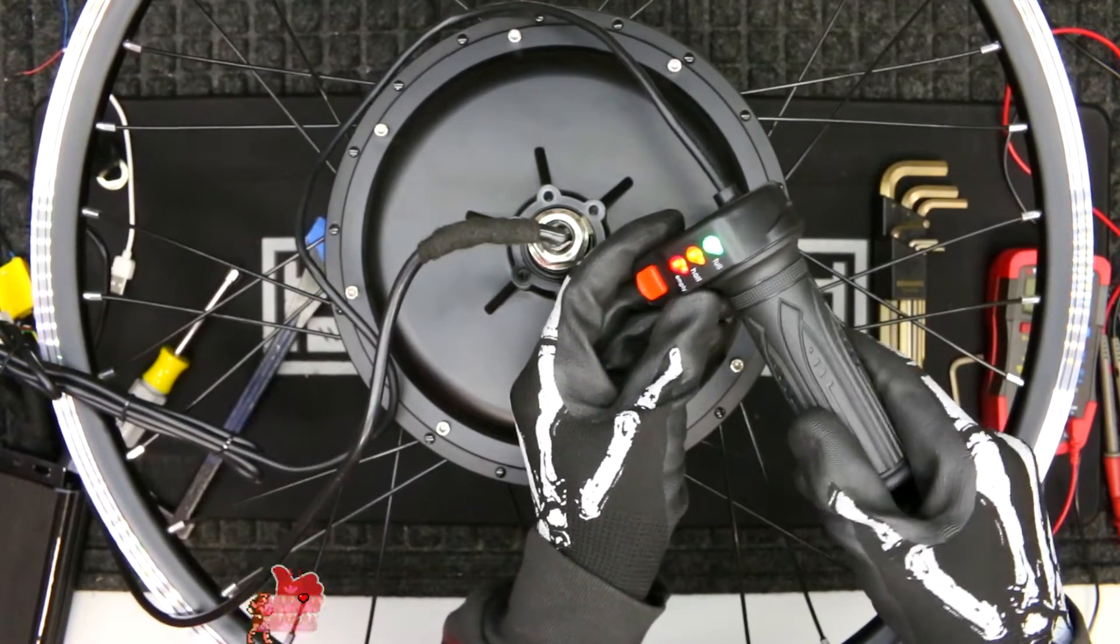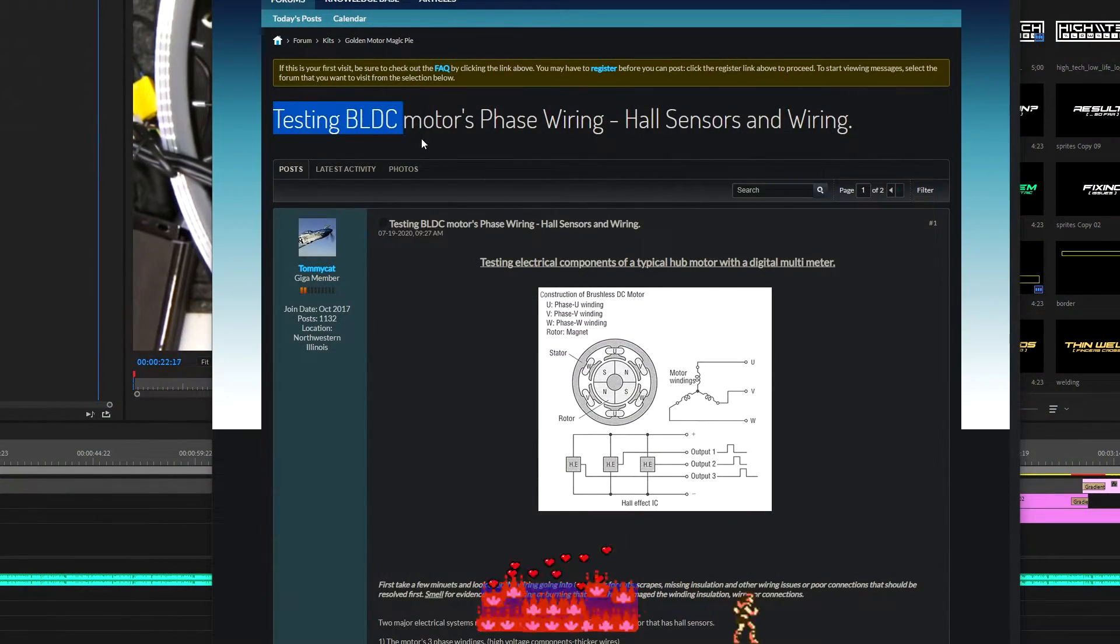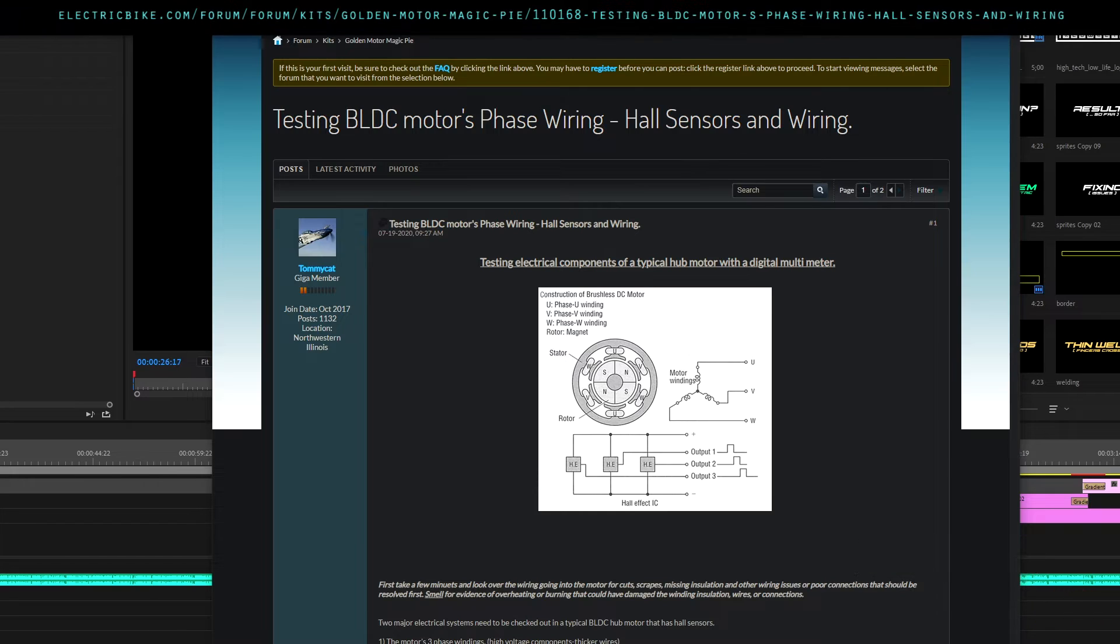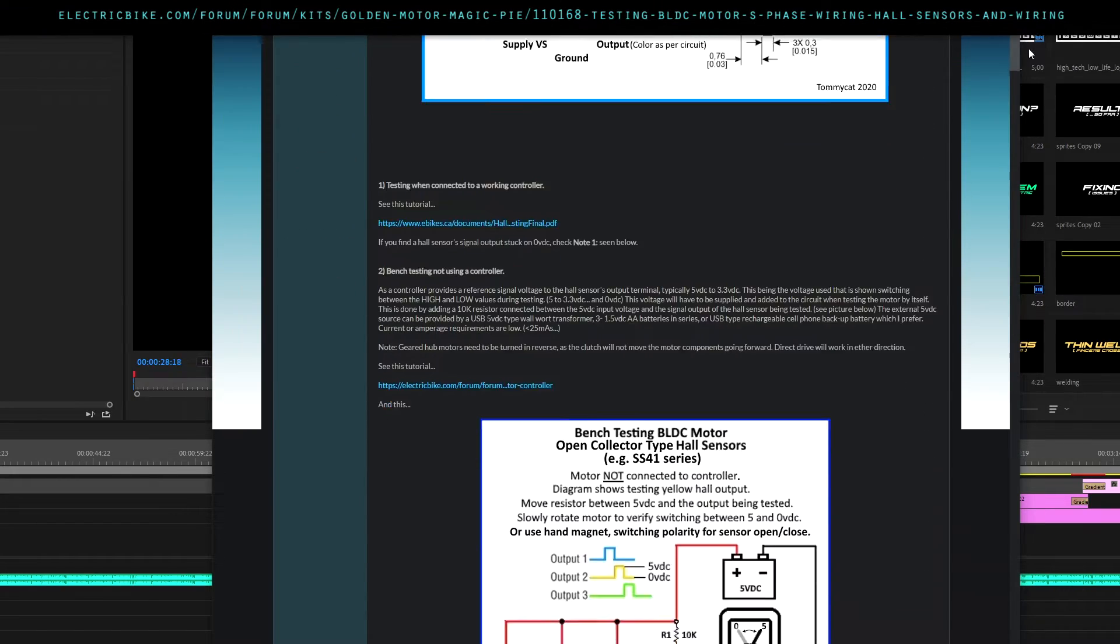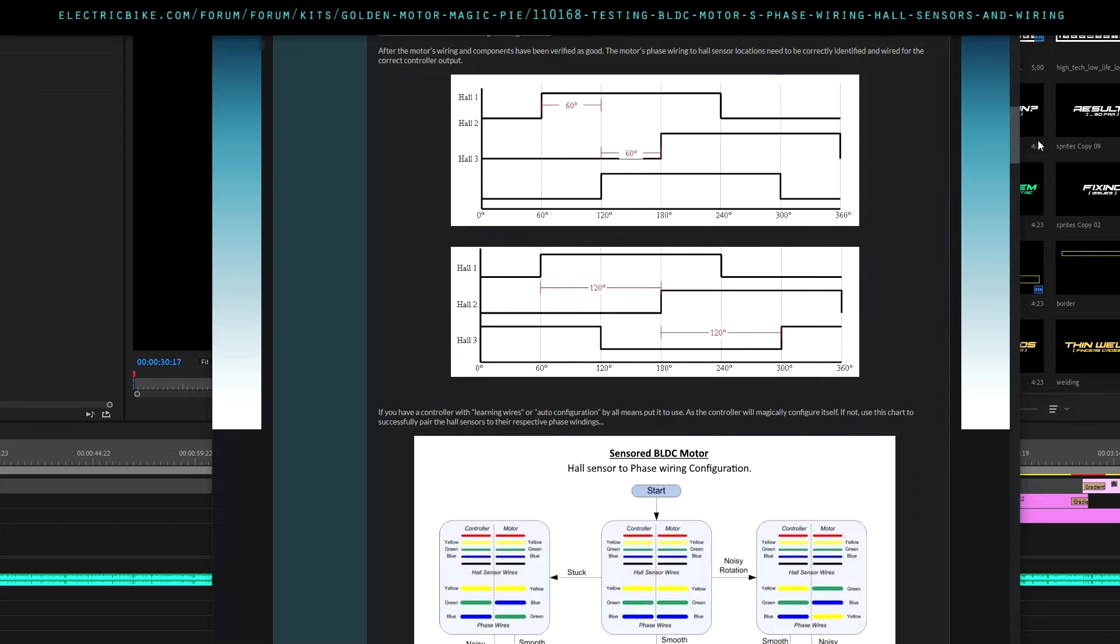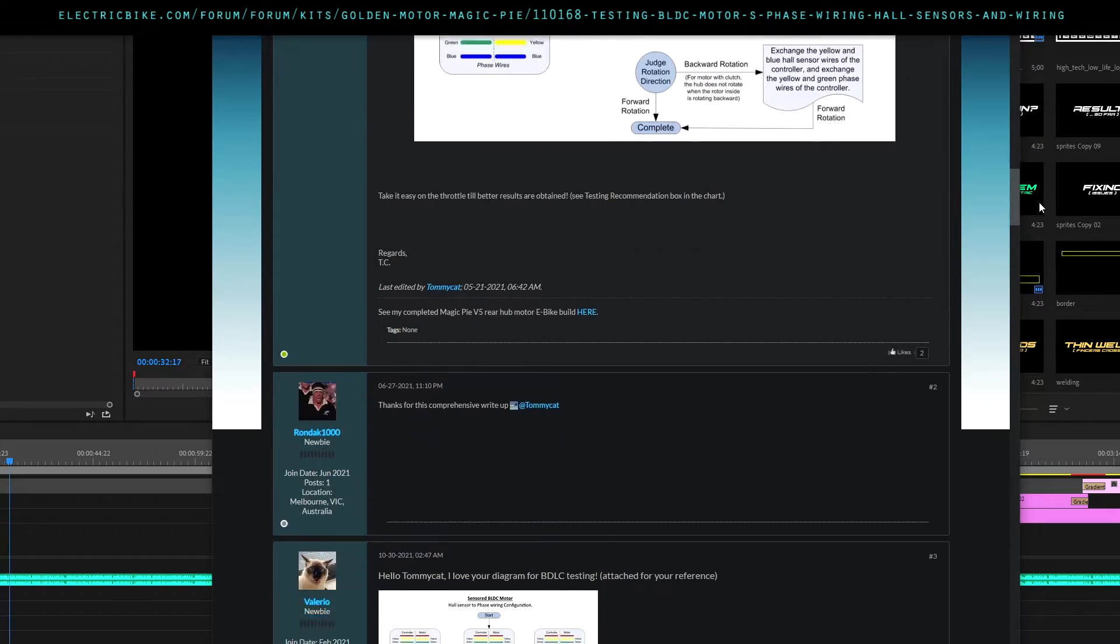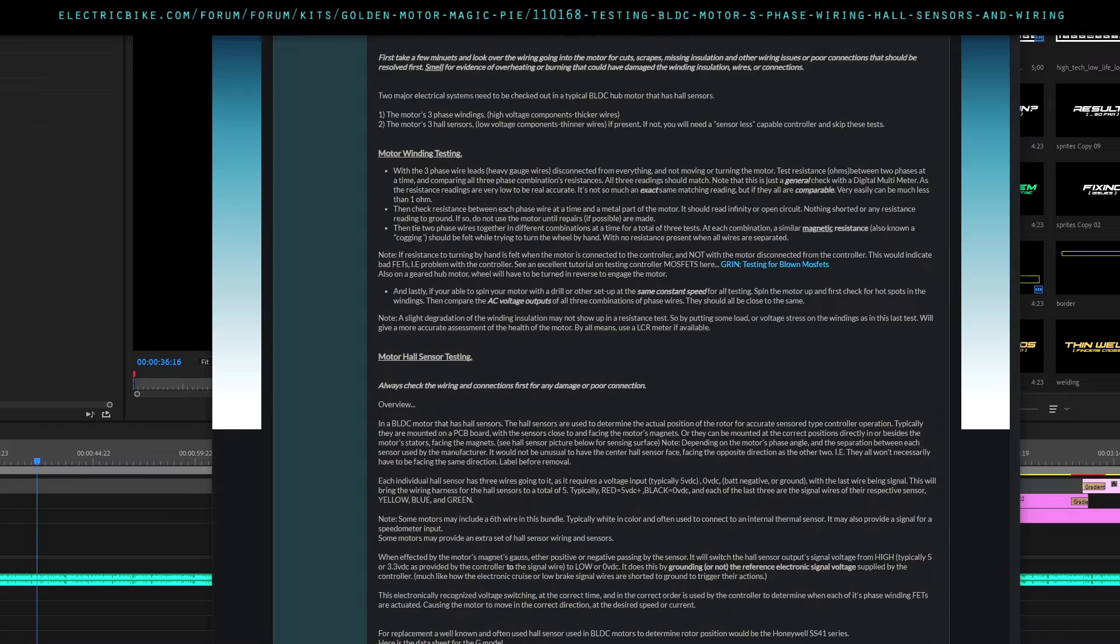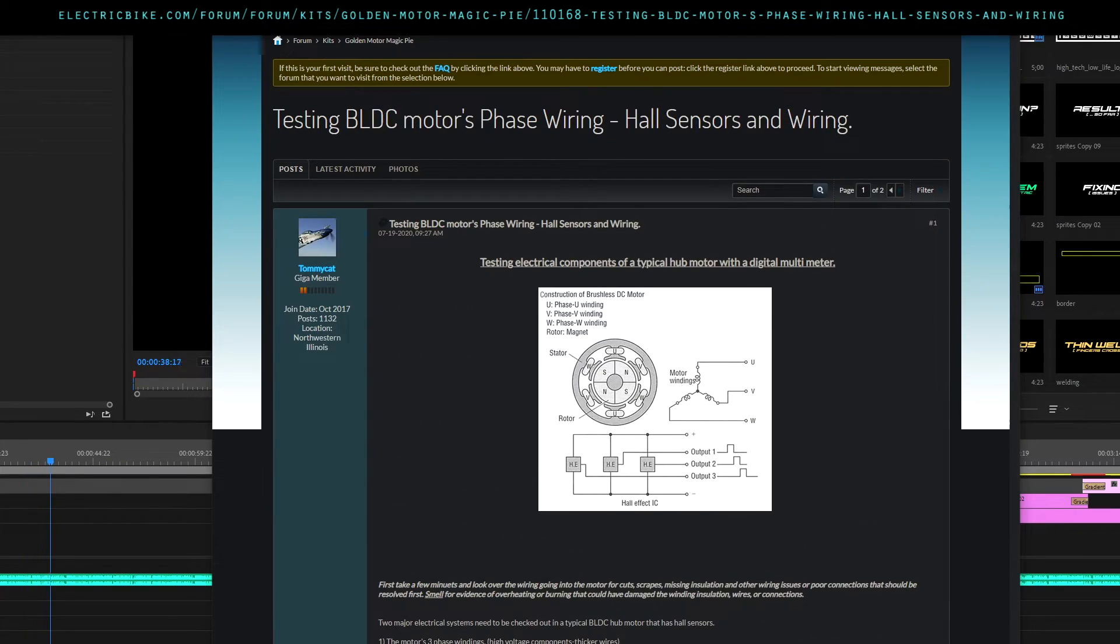I must say that most of the information I found from this forum post by this user, TommyCat. This info helped me fix my broken hub motor, so kudos to that guy for providing this excellent documentation. If you want even more in-depth testing procedures, please check out his post linked down below. I will also throw some links to some other informative posts that helped me fix my problem.